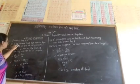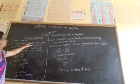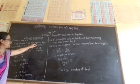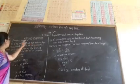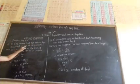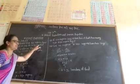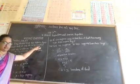If 7 kg onions cost 140 rupees, how much cost do we pay for 12 kg onions?